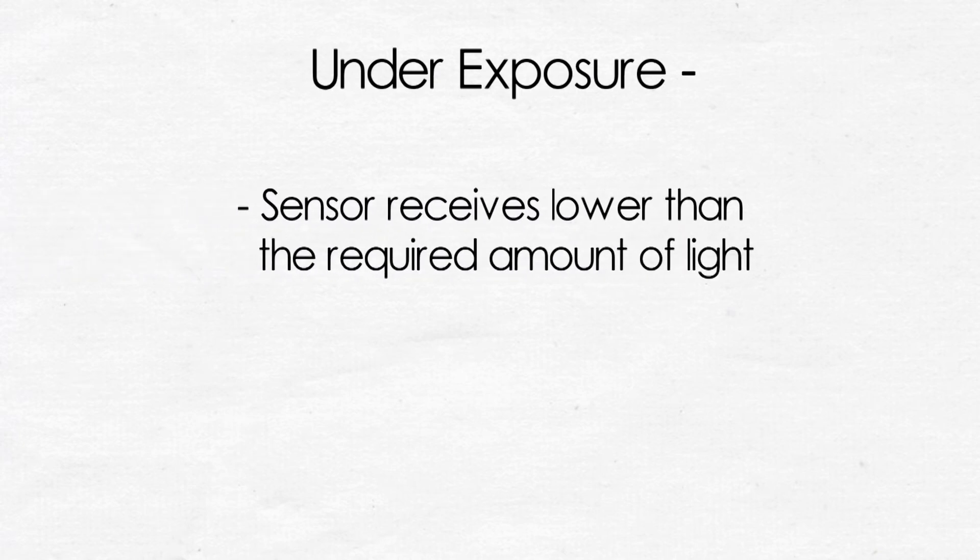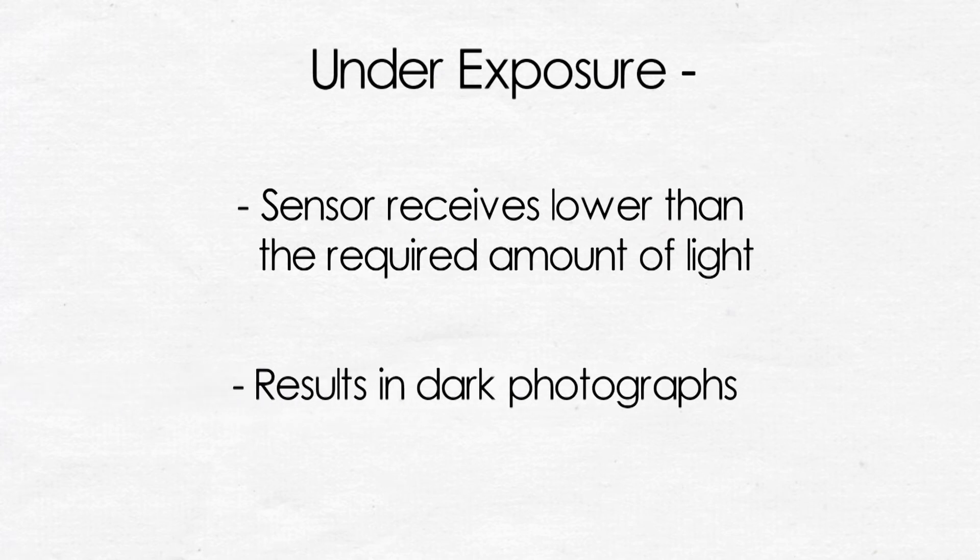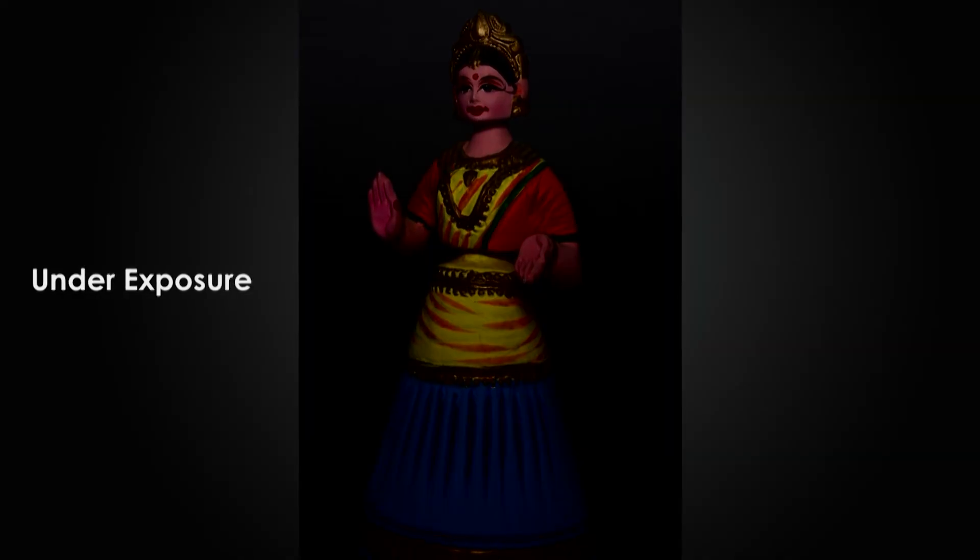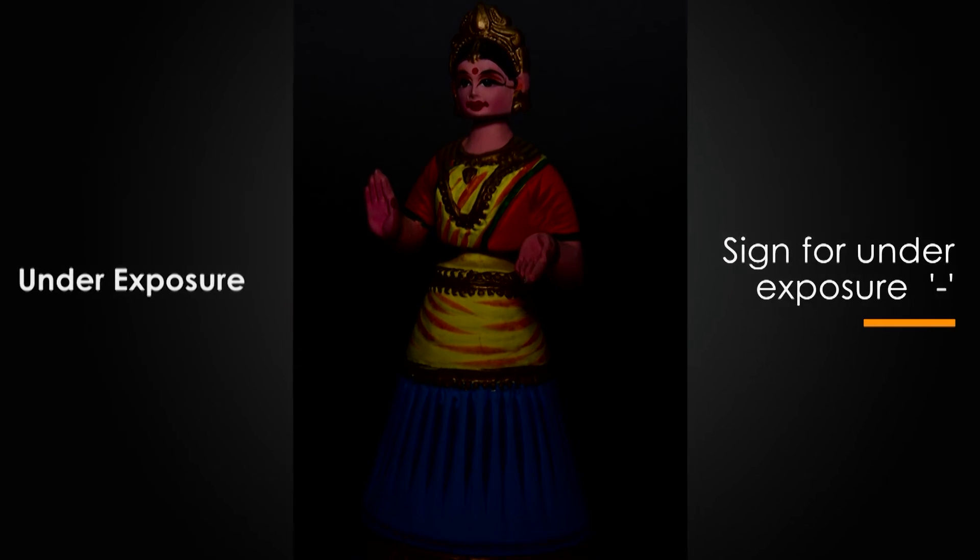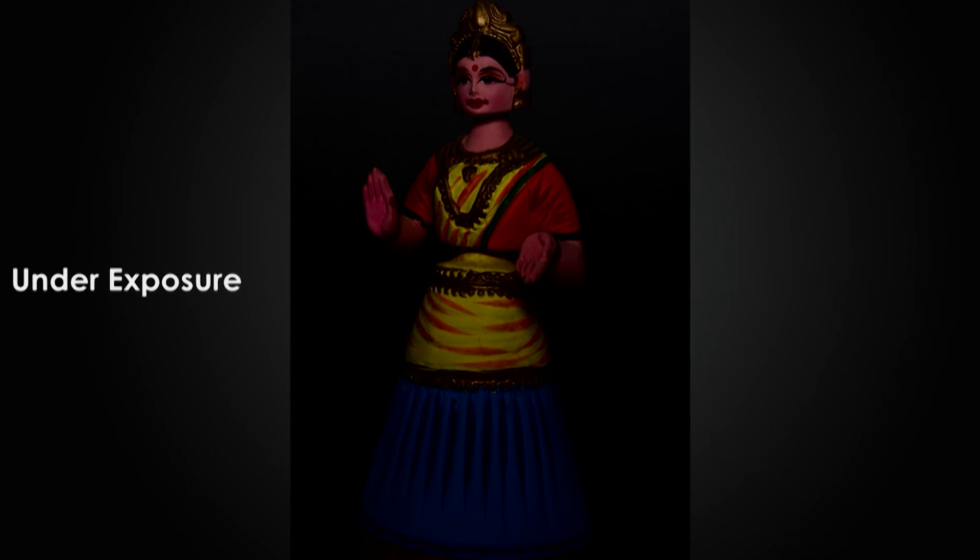Then you have what is known as the underexposure, which is just the reverse of the overexposure. When the camera receives less than the amount of light that is required, your photographs are going to be dark. Here is an example of an underexposed photograph. The same photograph which you saw earlier, which was overexposed, now becomes underexposed because you have allowed less than the amount of light which is required, because the exposure given was not enough to capture the light falling off the doll.